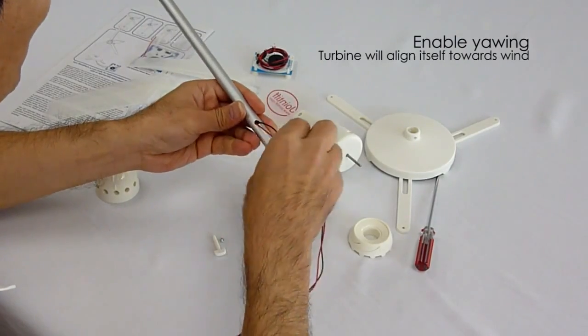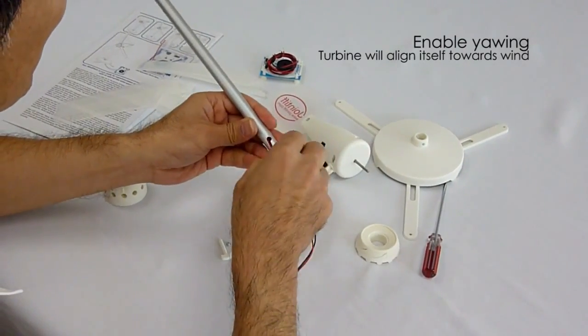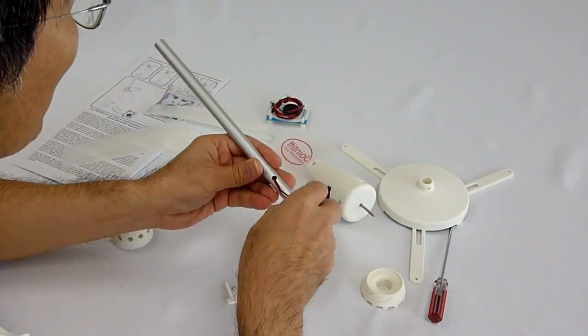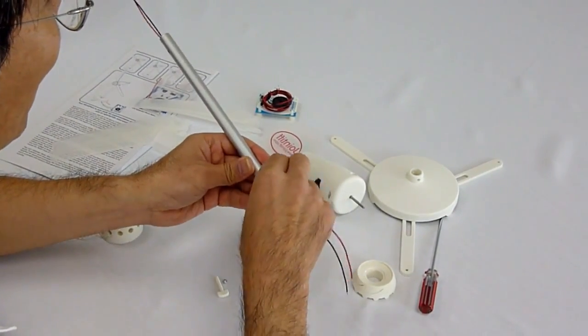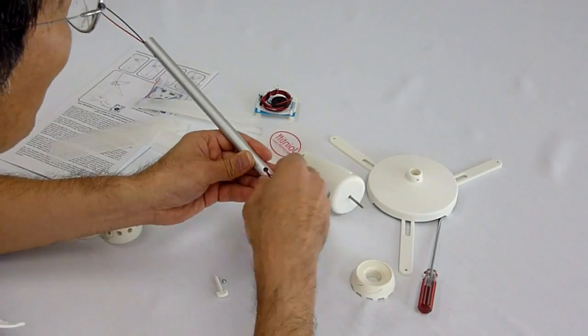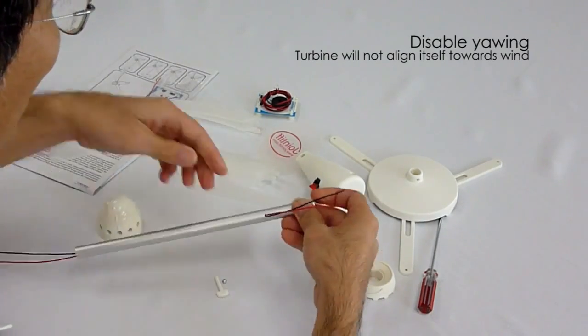If you want to enable the yawing of the turbine when the wind source such as a fan is fixed, you may insert the wires from the other hole on the opposite side of the screw hole to disable the yawing function.